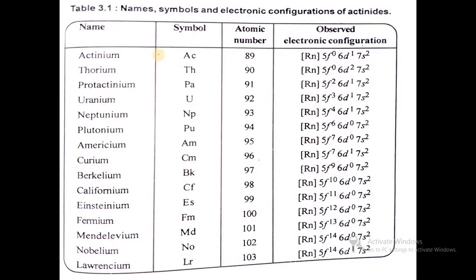We have discussed the electronic configuration of actinides - the name, symbol, atomic number, and observed electronic configuration. For actinium: [Rn] 5f0 6d1 7s2. For thorium, exceptional: [Rn] 5f0 6d2 7s2. For protactinium: [Rn] 5f2 6d1 7s2. Then continuously, electrons go into 5f series. In plutonium, electrons shifted from 6d to 5f for stability. In americium: 5f7 6d0 7s2, because it has a half-filled orbital. The 5f orbital has capacity of 14 electrons but contains 7 electrons, so it has extra stability. Curium is more stable with 5f7 6d1 7s2.